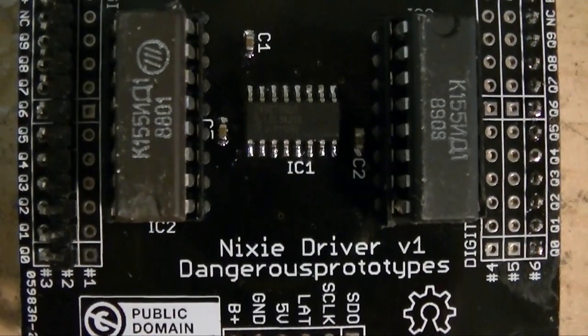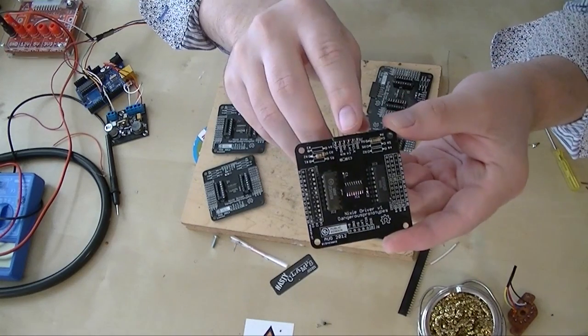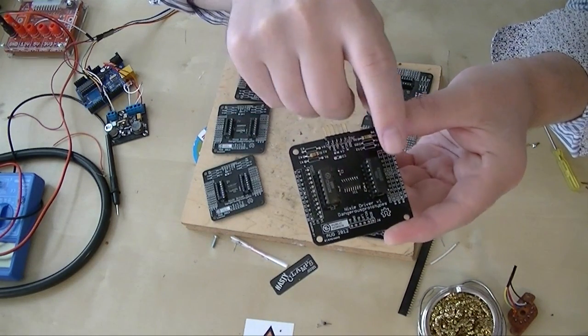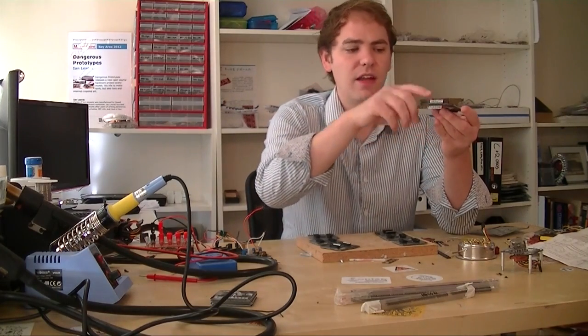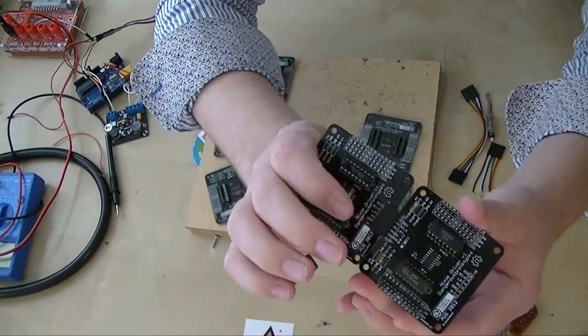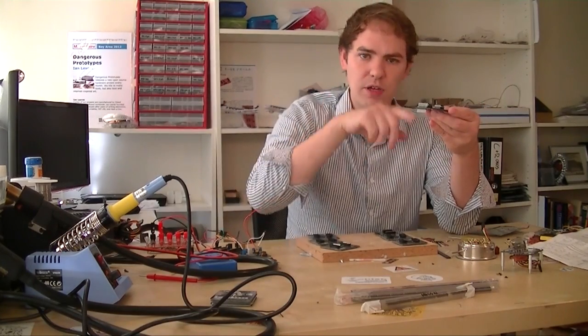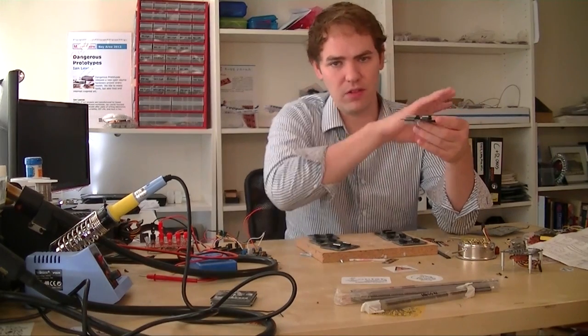In the middle, there's a common 74595 shift register. So what happens is we'll clock data in from one side and load up whatever values we want on the Nixie tubes. And then if there's more than one module in a row, the data just continues out and we load up the whole set and then bump the latch and the data goes out to the chips and it updates the whole board at once.